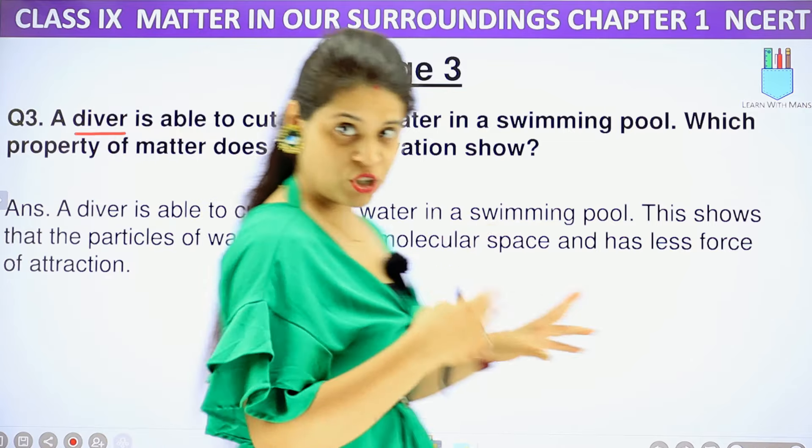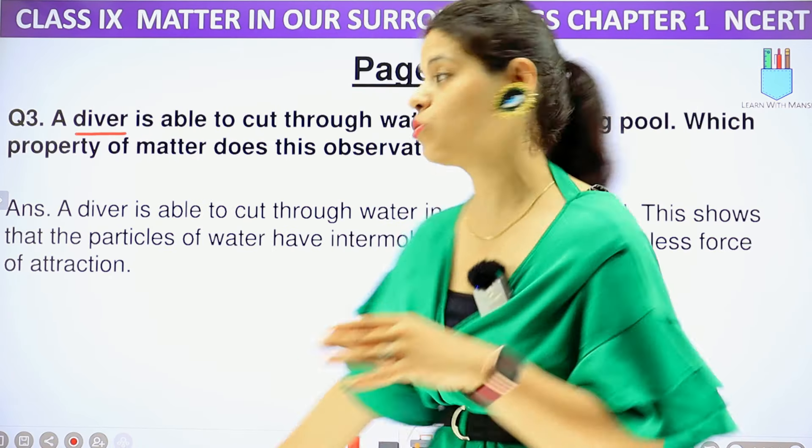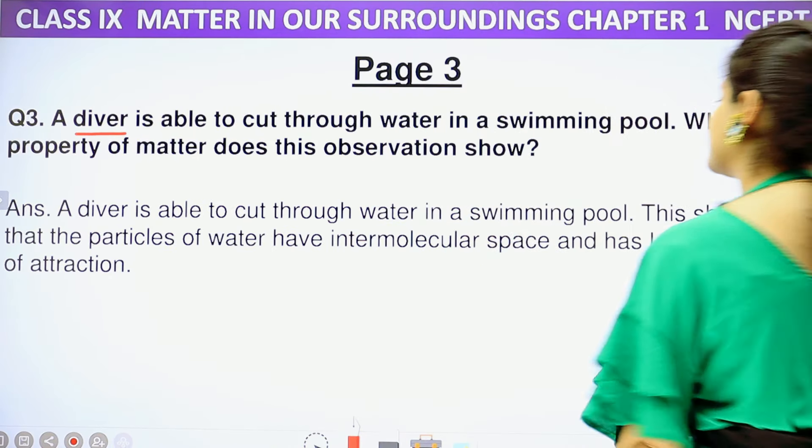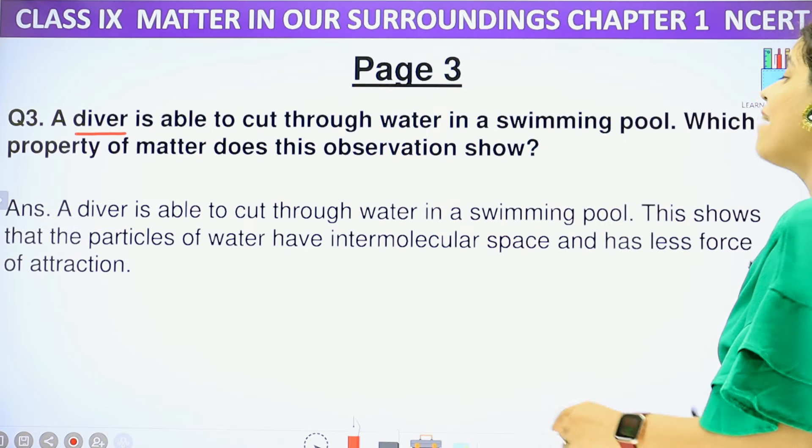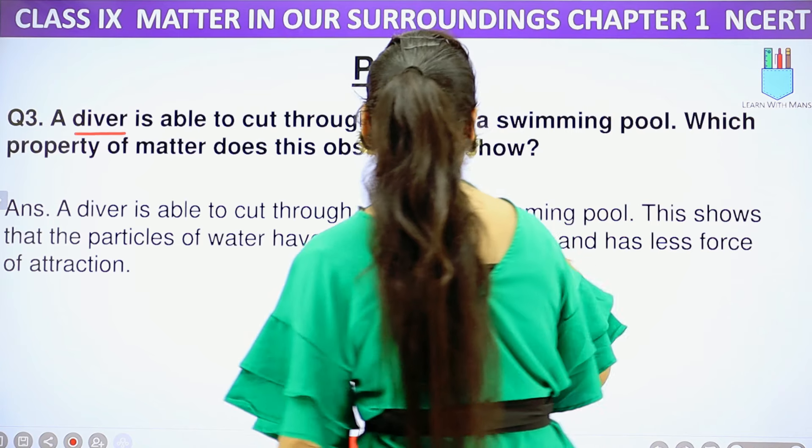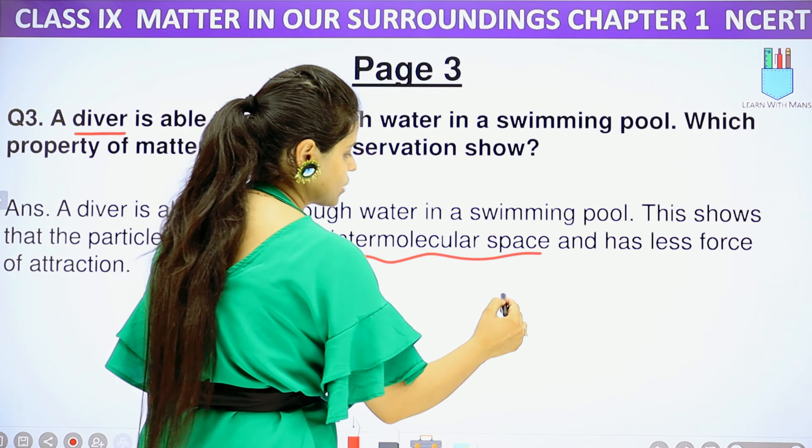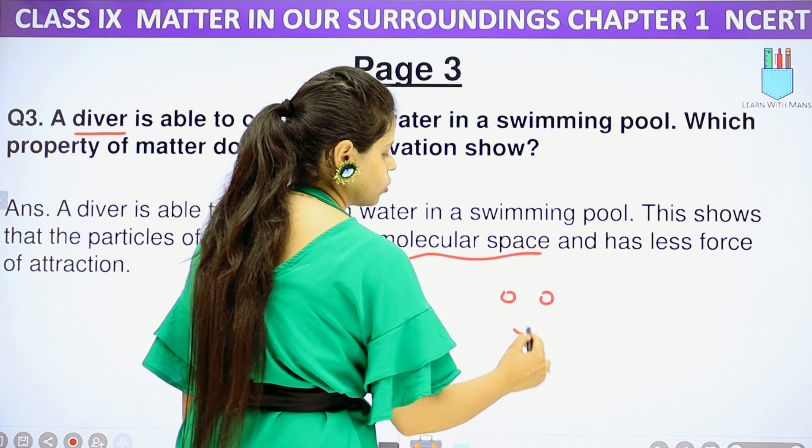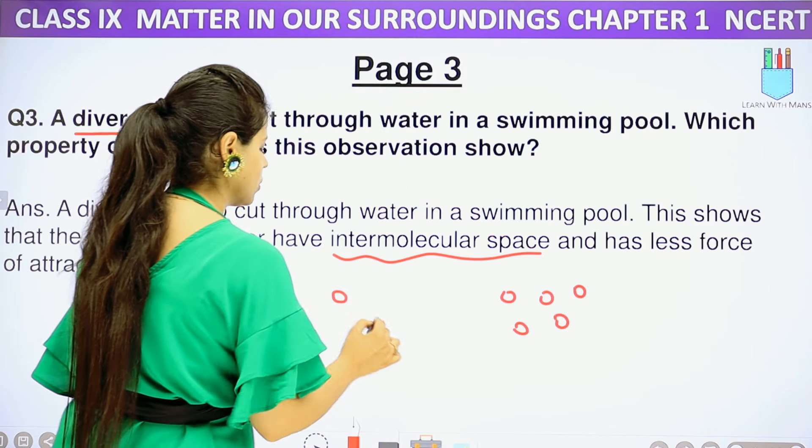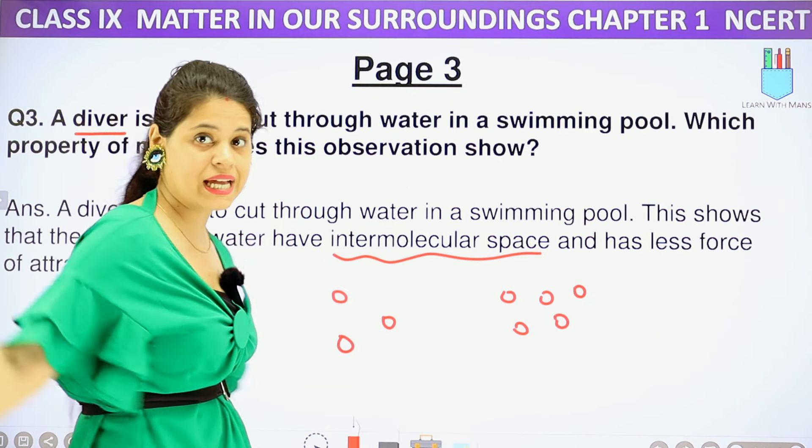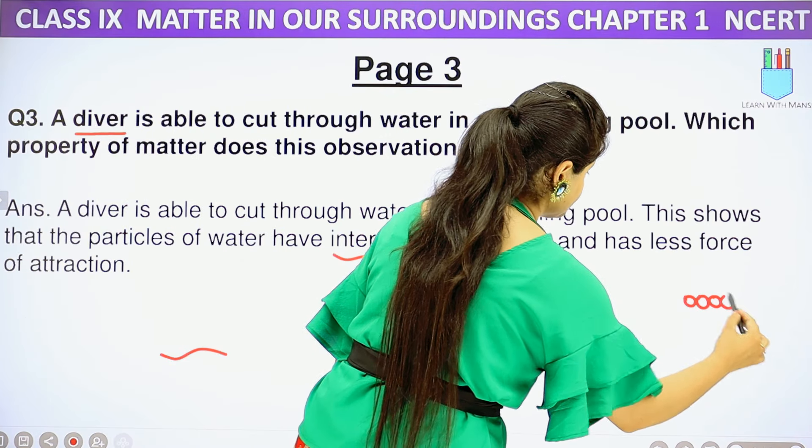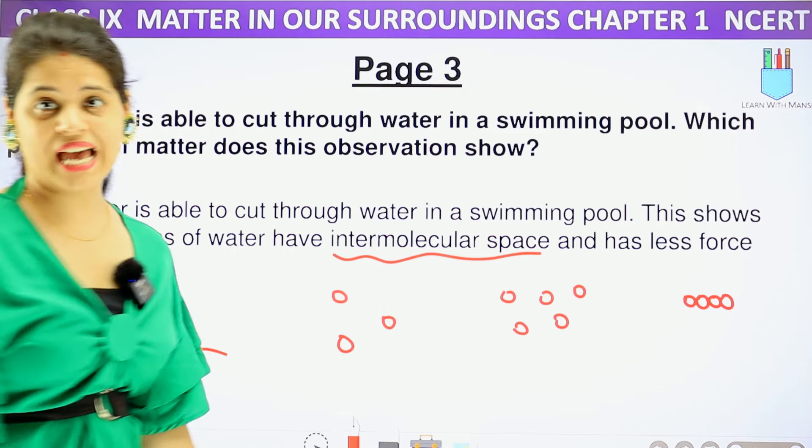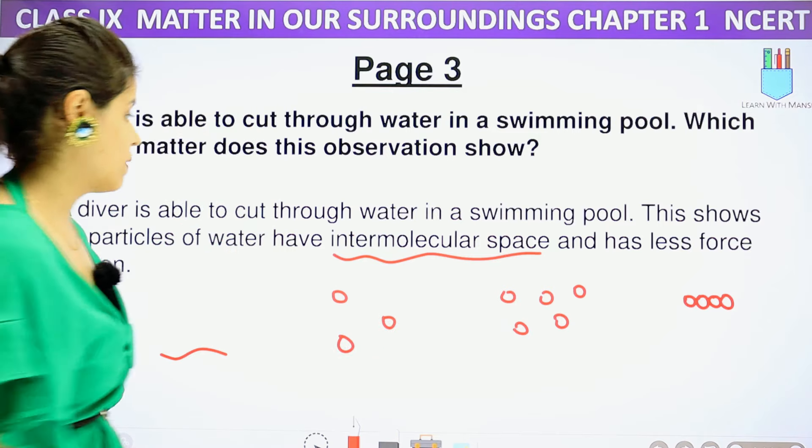So what property is shown here that a diver is able to cut through water in a swimming pool? This shows that the particles of water have intermolecular space. We have talked about that the particles of the liquid have a little space. In gas there is a lot of space. You can see how we can swim in the water.